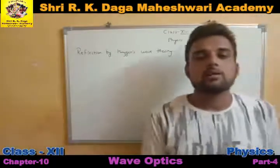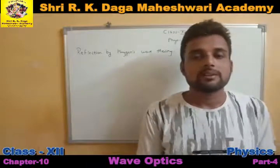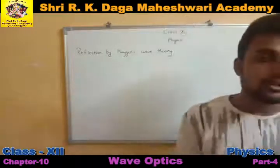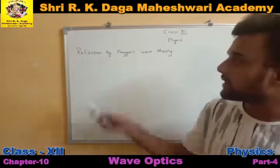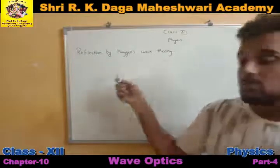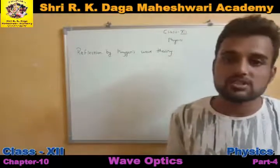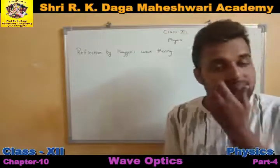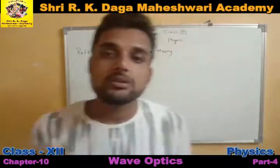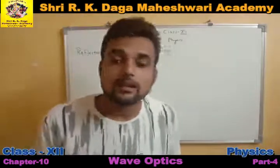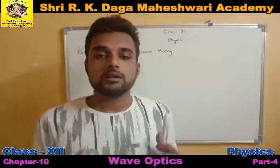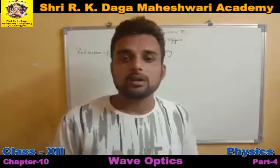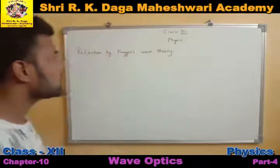Good morning students. In our last class we have seen the wavefront and the theory of secondary wavelet. Today we are going to start with our next topic, that is reflection by Huygens' wave theory, which is one of the most important topics of this chapter. We know about reflection, but we will see how Huygens explained reflection according to his wave theory.